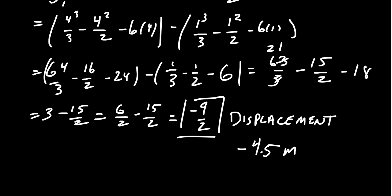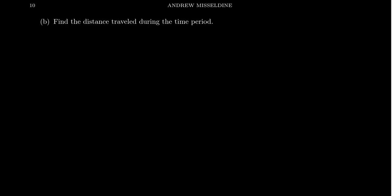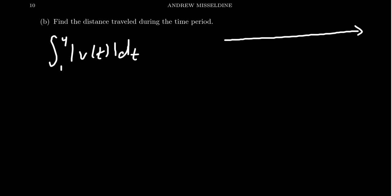Calculating displacement simply comes down to computing a definite integral. But suppose we want to find the total distance traveled by the particle during this time period. The total distance is actually the integral from one to four of the absolute value of the velocity function dt. The absolute value complicates the antiderivative process, but there's a nice trick to get around that.